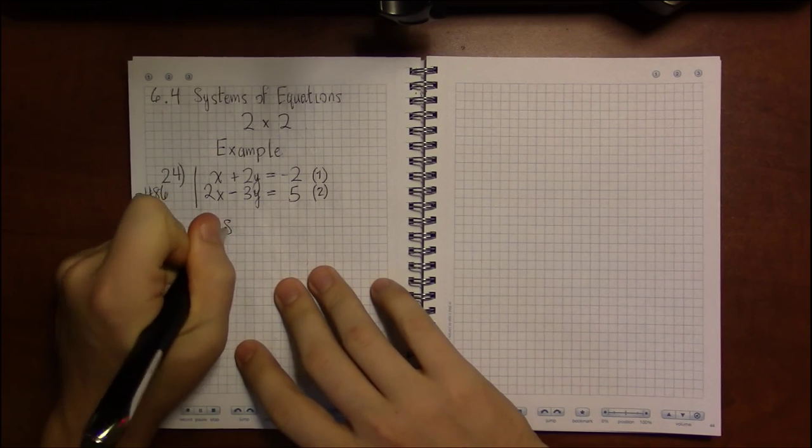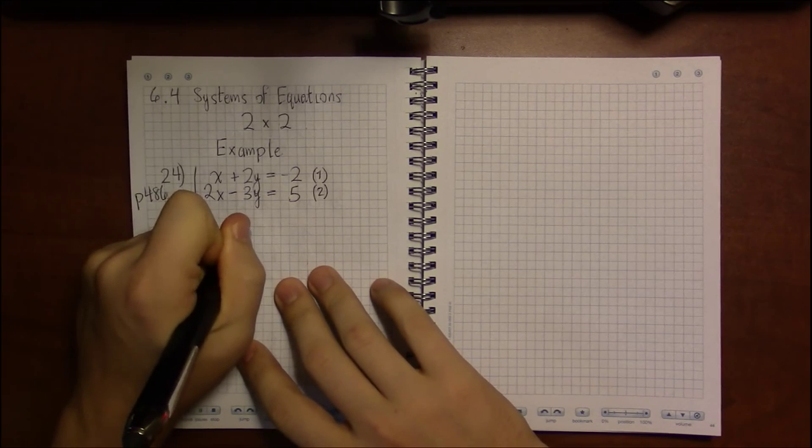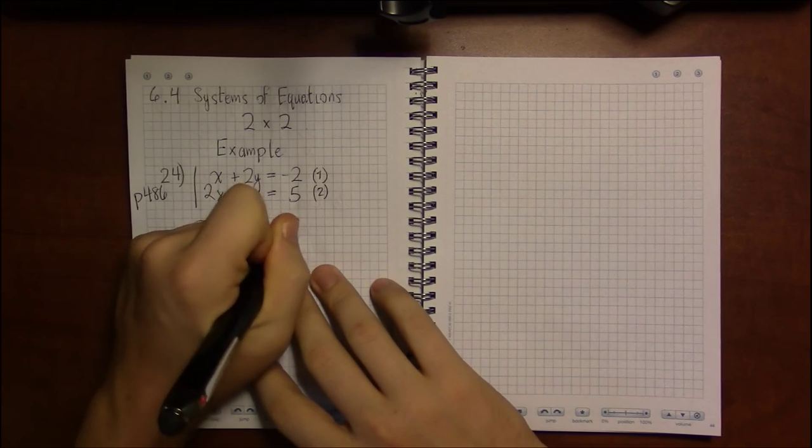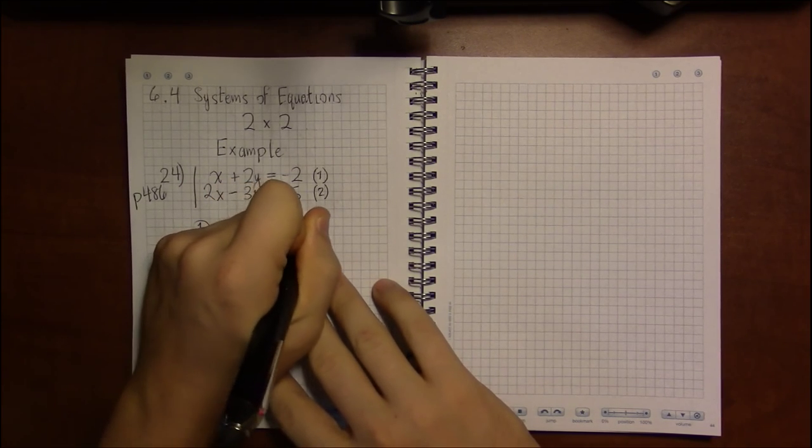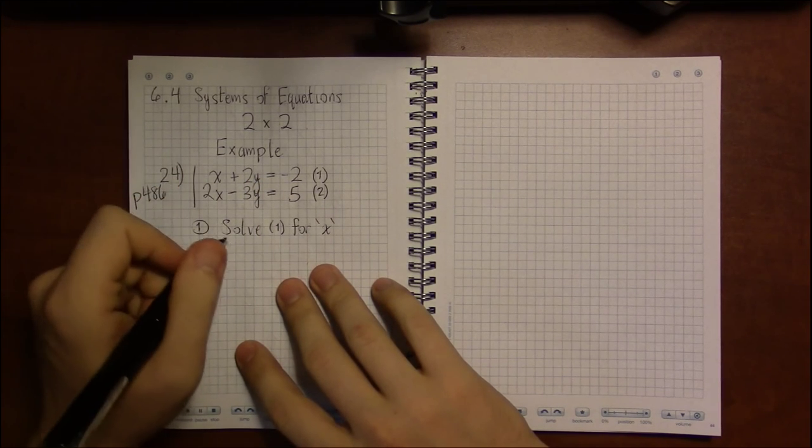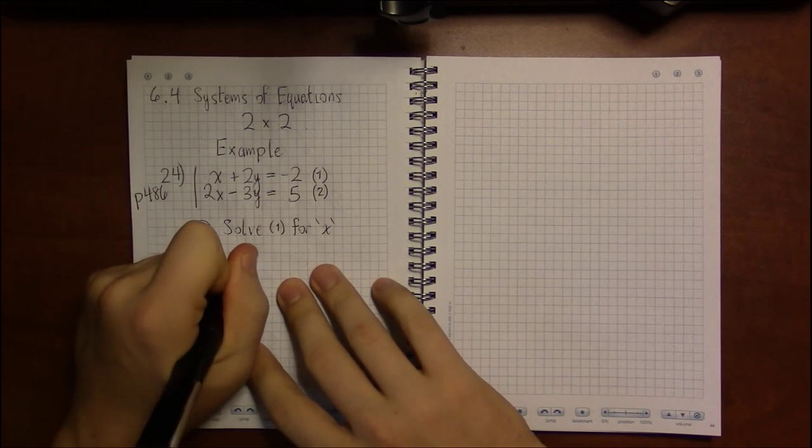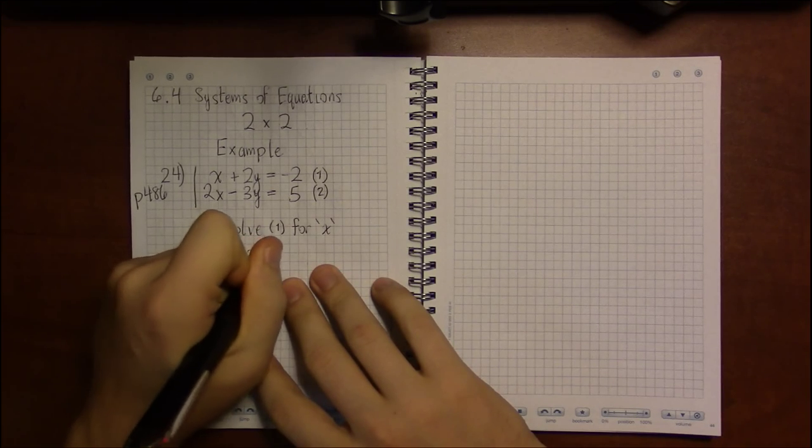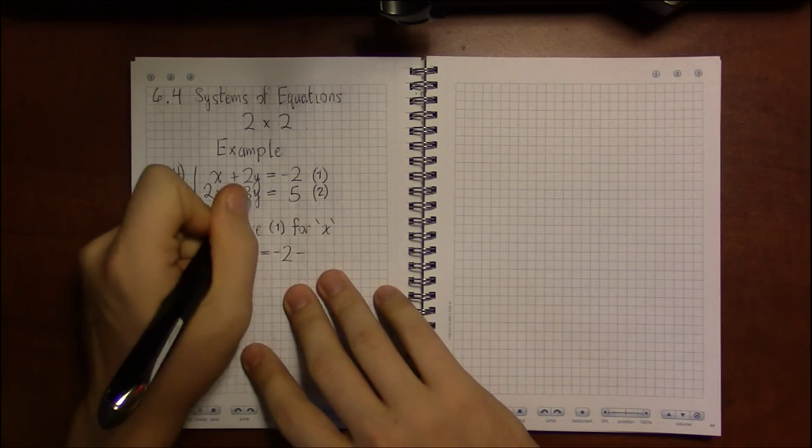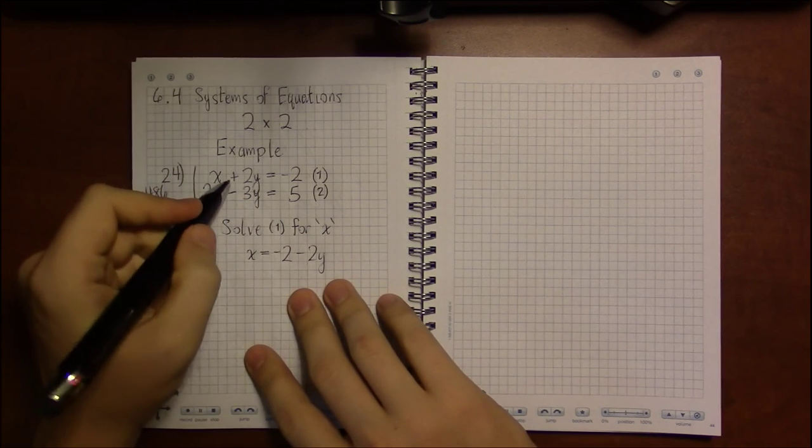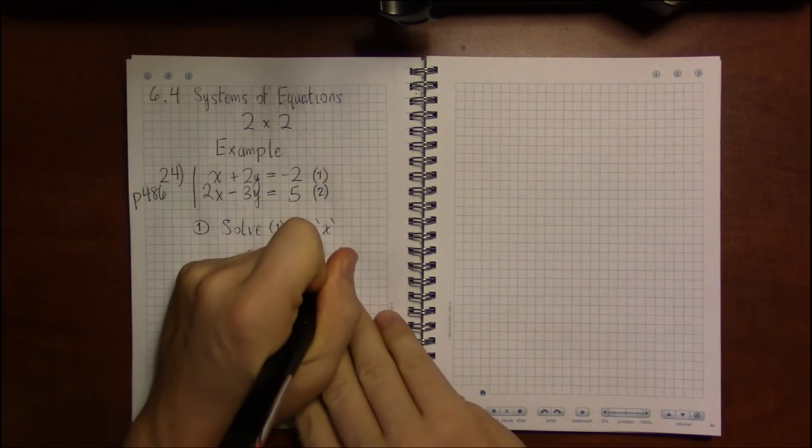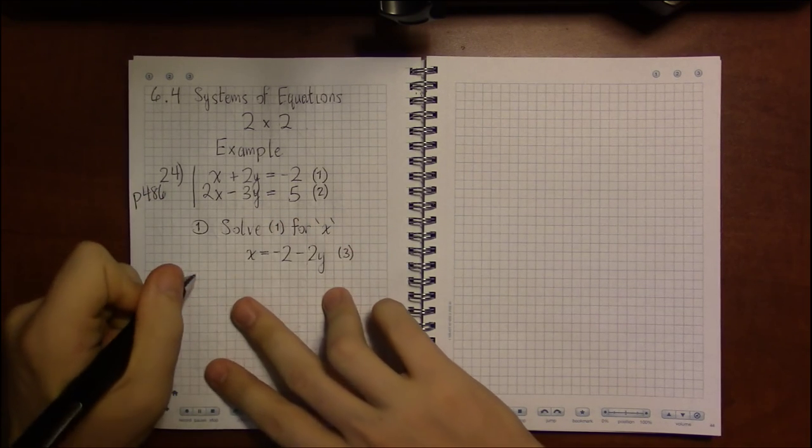In this case it's solving equation 1 for x, and in doing so we get that x equals minus 2 minus 2y, subtracting 2y from both sides, and we shall call this equation 3.